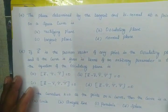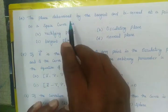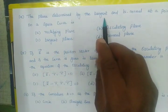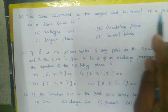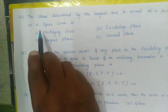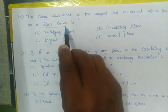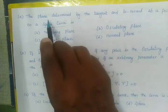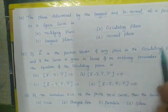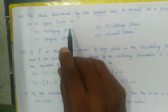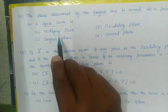The plane determined by the tangent and binormal at a point P on a space curve is called the rectifying plane.